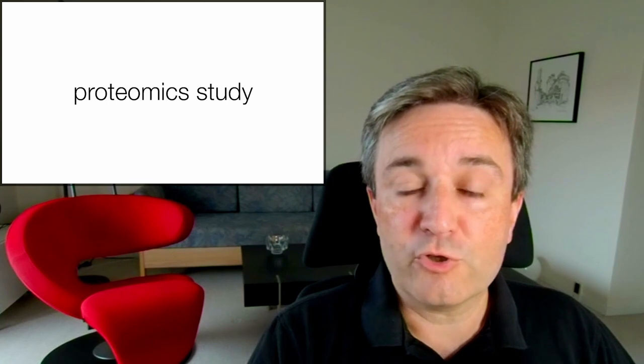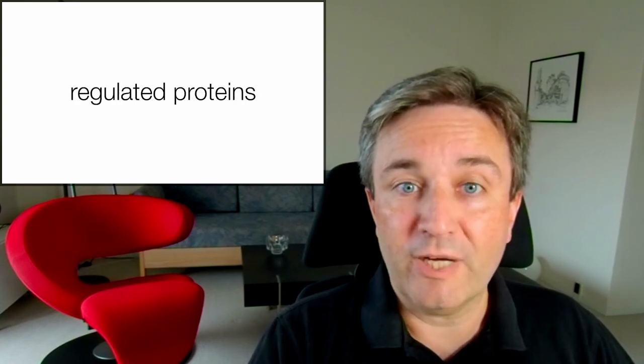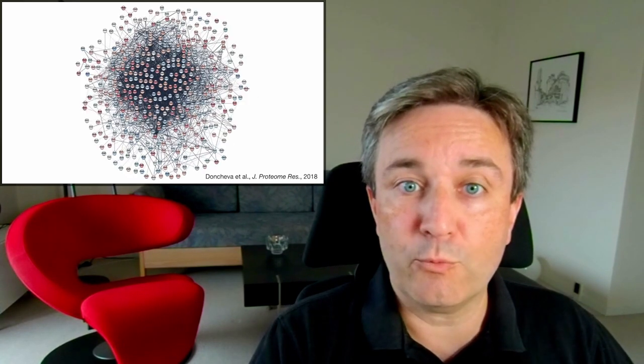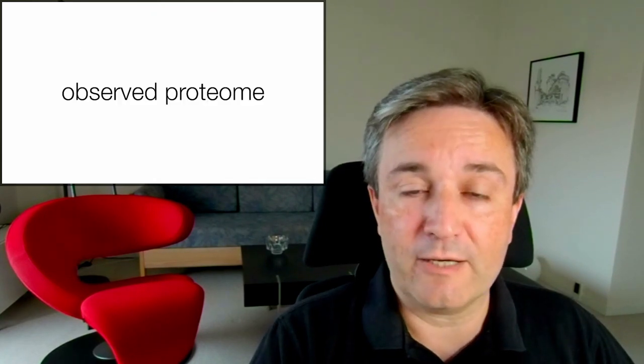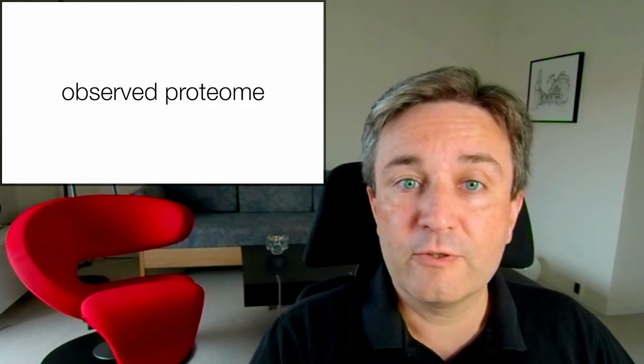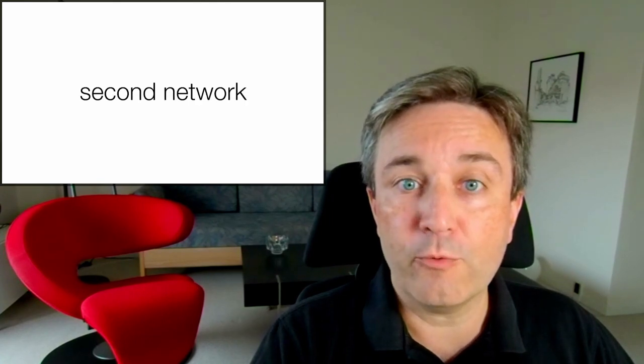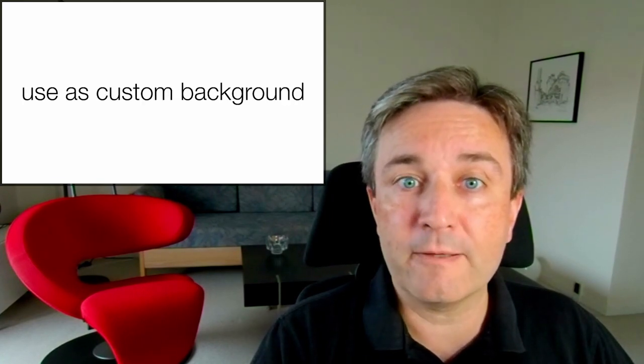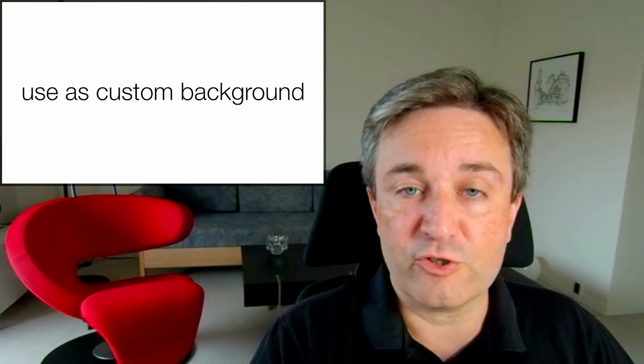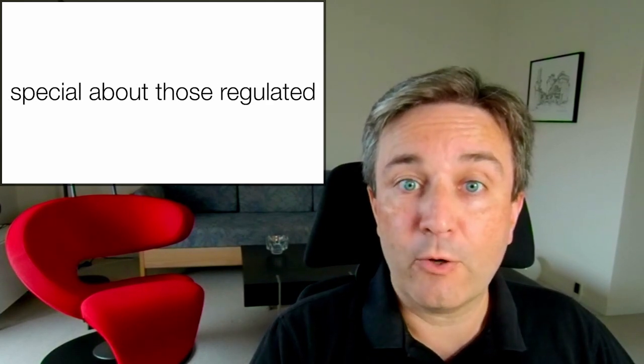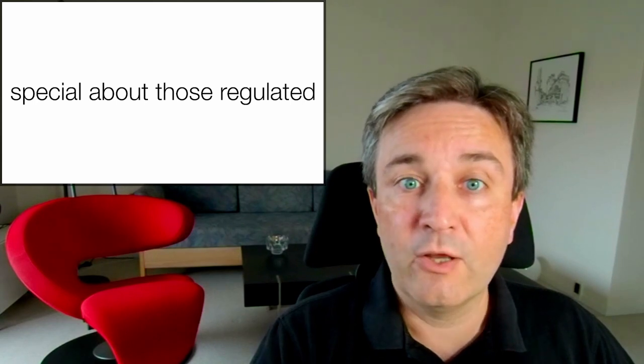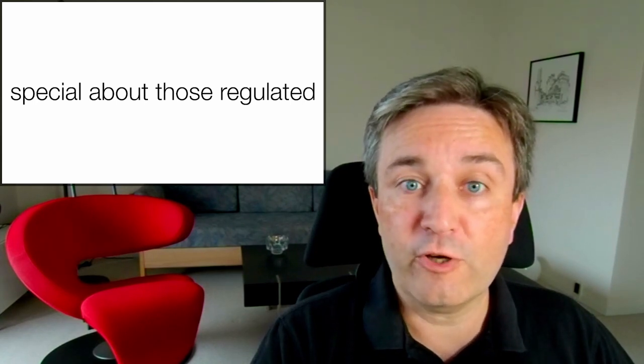If, for example, you've done a proteomic study and you've taken all the regulated proteins and produced a network like this, you will want to use the observed proteome as background. To do this, you load in the observed proteome as a second network in Cytoscape and use that as your custom background. That way you find out what's special about those proteins that are regulated compared to everything that was observed in your sample.